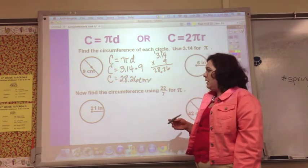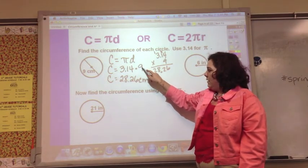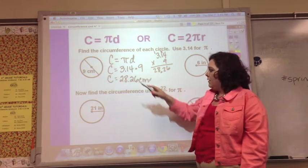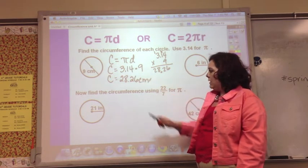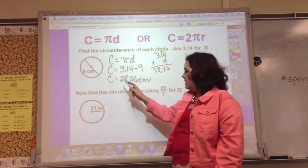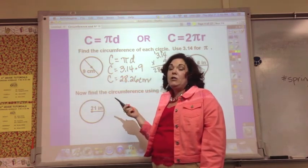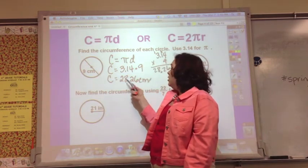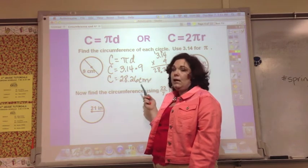So C equals 28.26 centimeters, and it's not squared because we're just doing a dimension, a unit times a number, so it's just centimeters. If you were estimating, 9 times 3 is 27, and 28.26 is really close to 27.